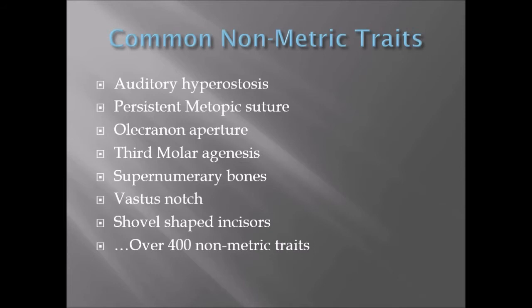The most common of the non-metric traits are things called auditory hyperostoses. Whenever you see the word 'ostoses,' that means it's a growth of bone. 'Ost' means bone, like osteometry, and 'hyper' means over - so there's an overgrowth of bone. The auditory hyperostoses happen, not surprisingly, in the ear. There's some speculation they can be caused by deep-sea diving in cold water, though we're not sure.